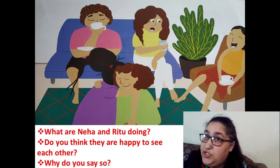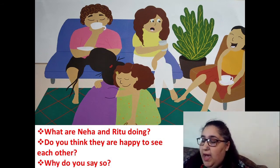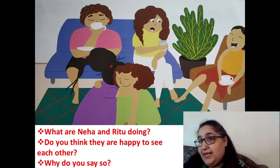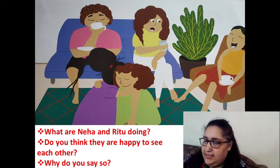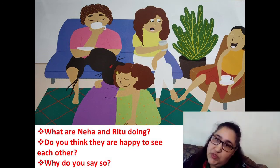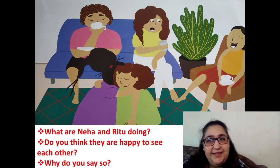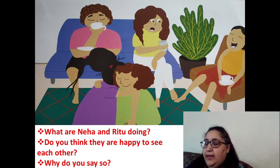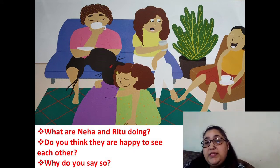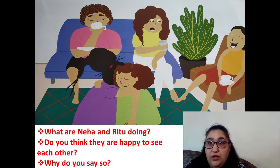Let's look at the next page. Now what are Neha and Ritu doing? Look at this picture carefully — Neha and Ritu are doing something to each other. What are they doing? Next: do you think they are happy to see each other? Look at the picture carefully — are they happy to see each other or sad to see each other? What do you feel? Why do you say so? What makes you feel they are happy or sad? You have to answer that.